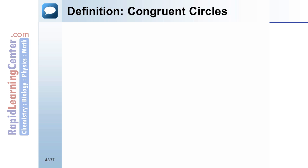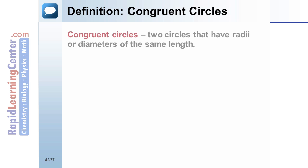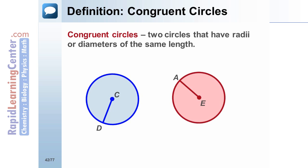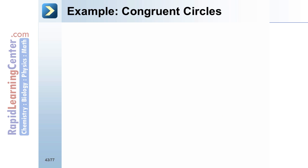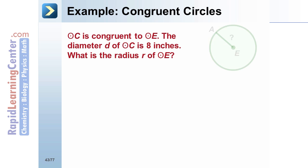Definition — congruent circles: congruent circles are two circles that have radii or diameters of the same length. For example, circle C is congruent to circle E.